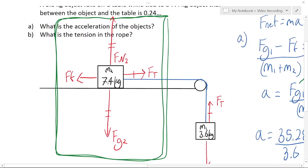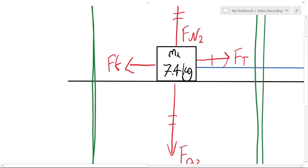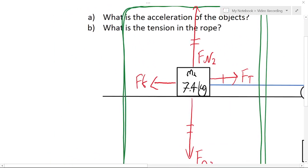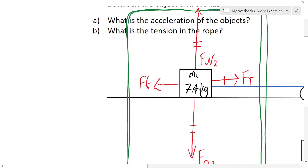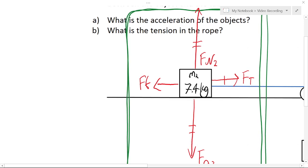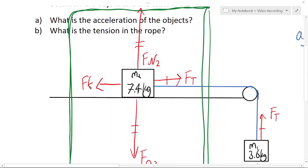So looking, ignoring the hanging mass completely, looking only at the second mass here, we can see that Fg and Fn cancel. They balance with each other. Tension is pulling the block forward and friction is trying to resist. So tension is the winning force and friction is the losing force.